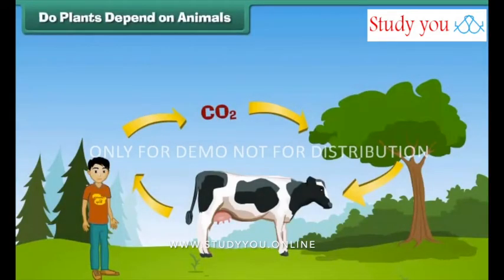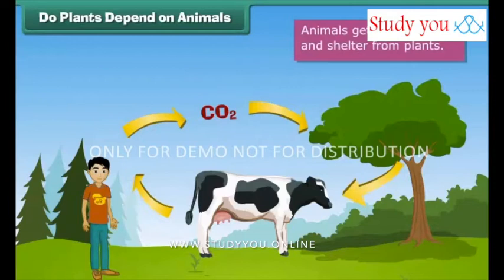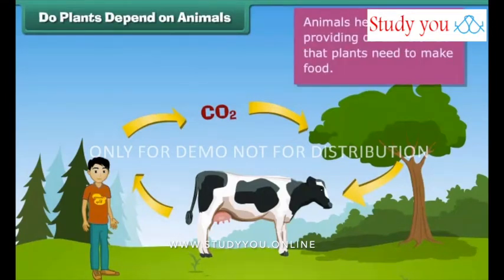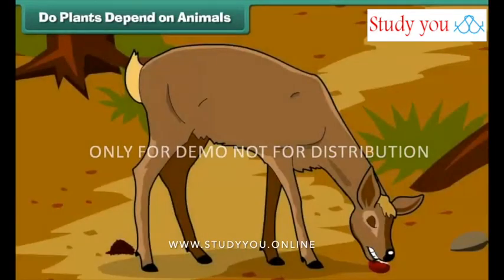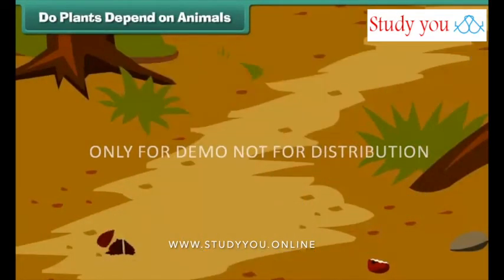Do plants depend on animals? Animals get food, oxygen and shelter from plants. Do they give anything to plants in return? Yes, plants need carbon dioxide to produce their food. When animals breathe out, they release carbon dioxide and help the plants in making their food by the process of photosynthesis. Plants depend largely on animals to produce their seeds via seed dispersal.